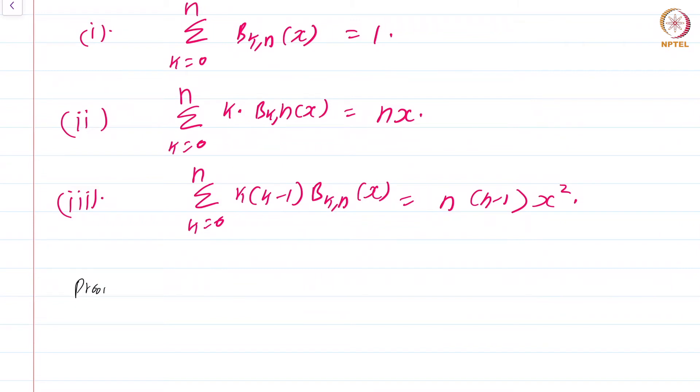For this proof I would need one basic property of these combinations, that is I need this fact that k times n choose k is just n times n minus 1 choose k minus 1.